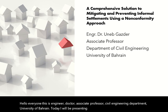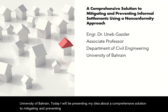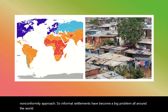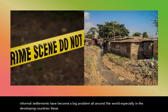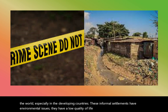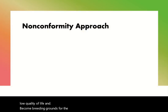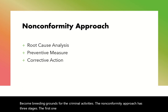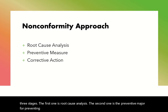Today I will be presenting my idea about a comprehensive solution to mitigating and preventing informal settlements using a non-conformity approach. Informal settlements have become a big problem all around the world, especially in developing countries. These informal settlements have environmental issues, a low quality of life, and they become breeding grounds for criminal activities. The non-conformity approach has three stages: the first is root cause analysis, the second is the preventive measure for preventing the problem in the future, and the third is the corrective action for the current problem.